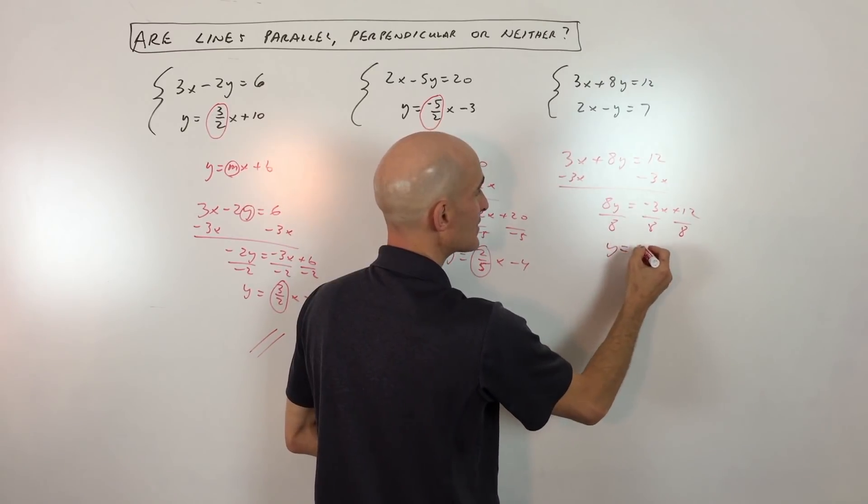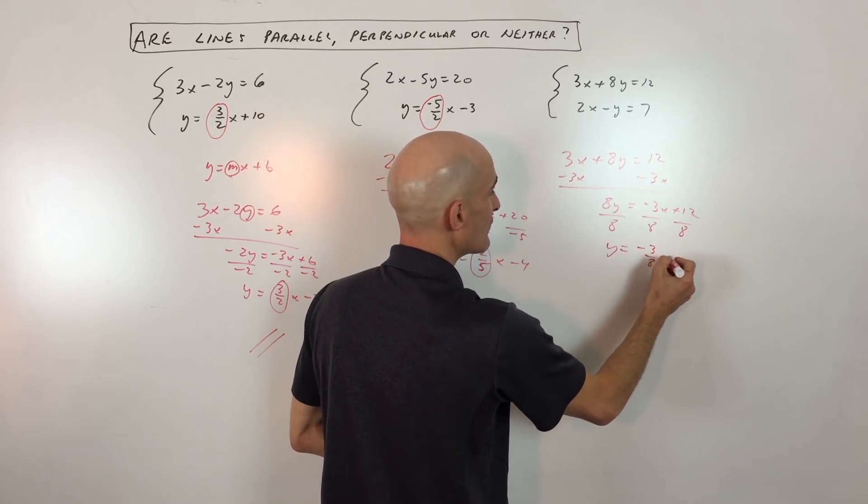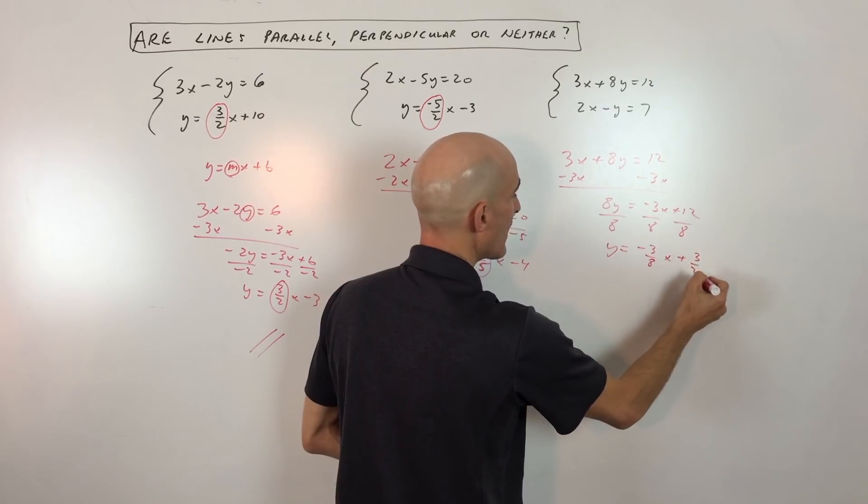Okay, so we have negative 3 eighths x plus, if we reduce that, that's 3 halves. And you can see here our slope is negative 3 eighths.